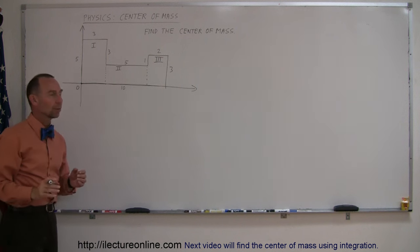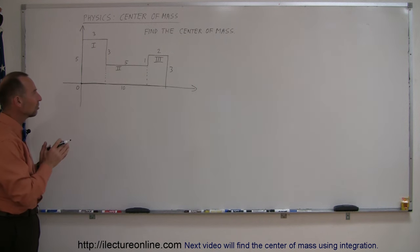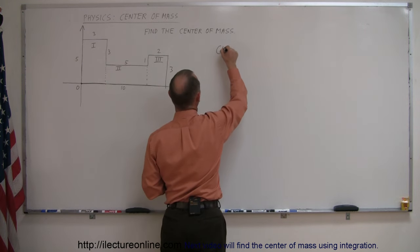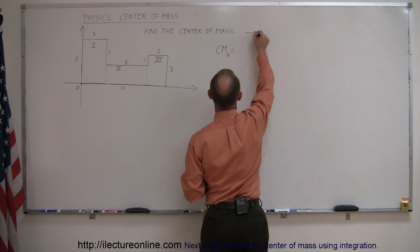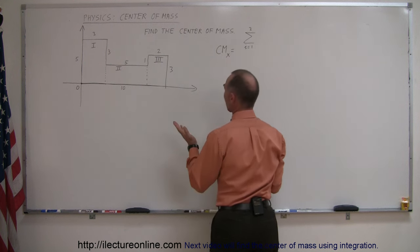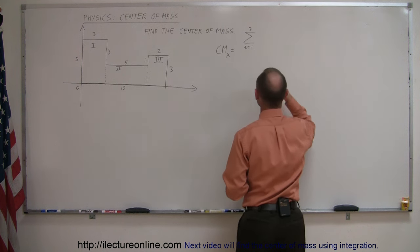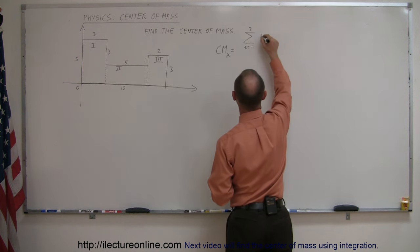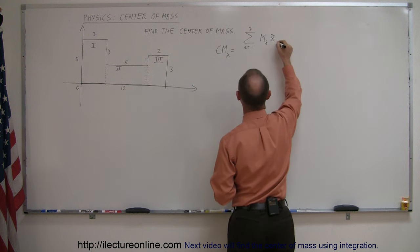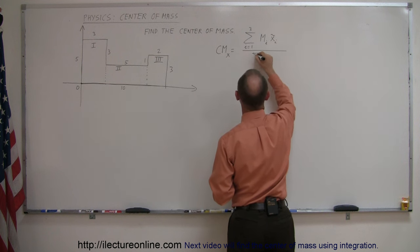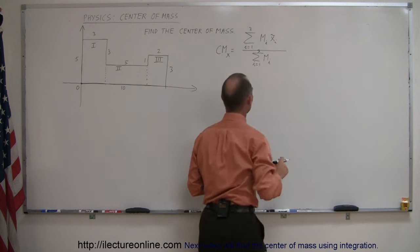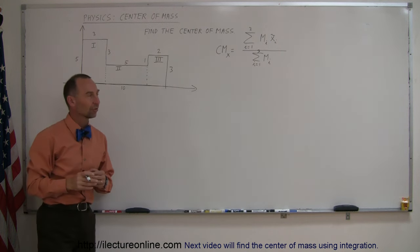What we're going to do now is find the center of mass of each piece and then add them together according to our equation. The center of mass in the x-direction is equal to the sum from i equals 1 to 3 — because there are three pieces — of the mass of each piece times the center of mass of each piece in the x-direction, all divided by the sum of all the masses, again from i equals 1 to 3.